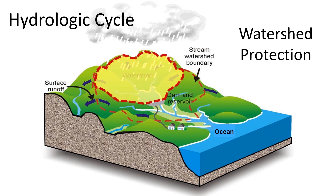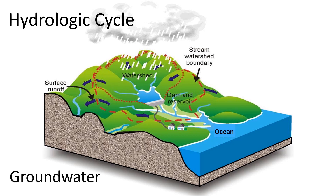The watershed is the area of land that collects and directs precipitation to a collection point, which is usually a natural or man-made lake. The watershed is defined by the mountain ridges or higher elevation points that surround the river, lake, or reservoir from which the water utility is taking its water.